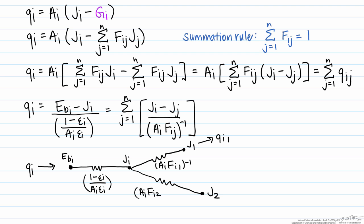And this can be looked at again as q from surface i to surface 2. You can put together a network like this for any number of surfaces within the enclosure.